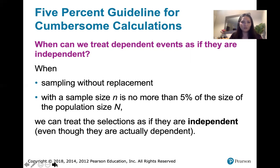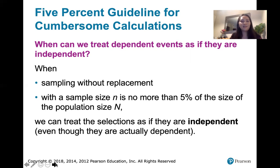Quickly, the rule says: if we're sampling without replacement and the sample size n is less than or equal to 5% of the total population size, then you can act as if the selections are independent, even though they're not. That's going to make your calculations much simpler.